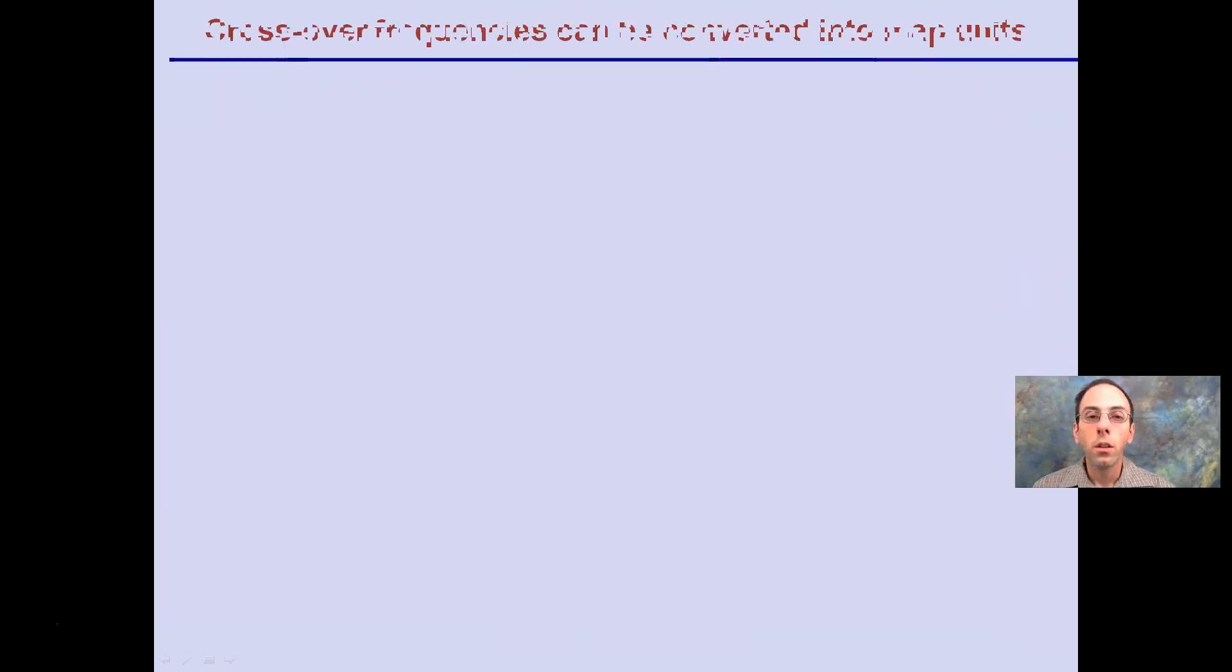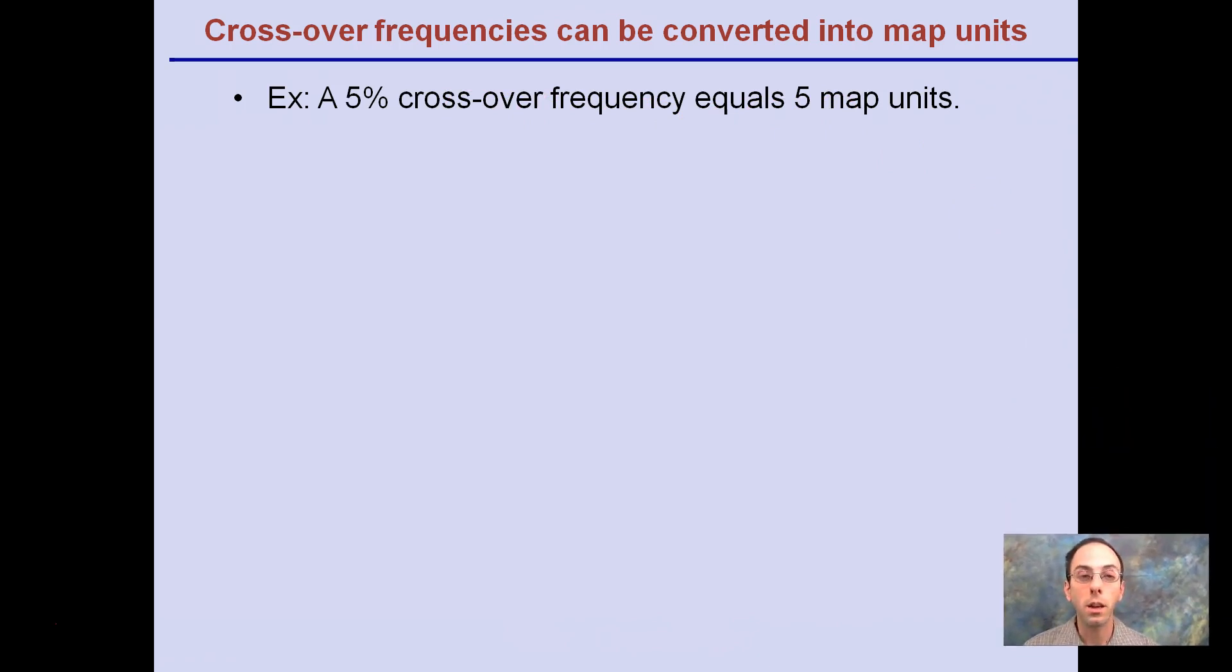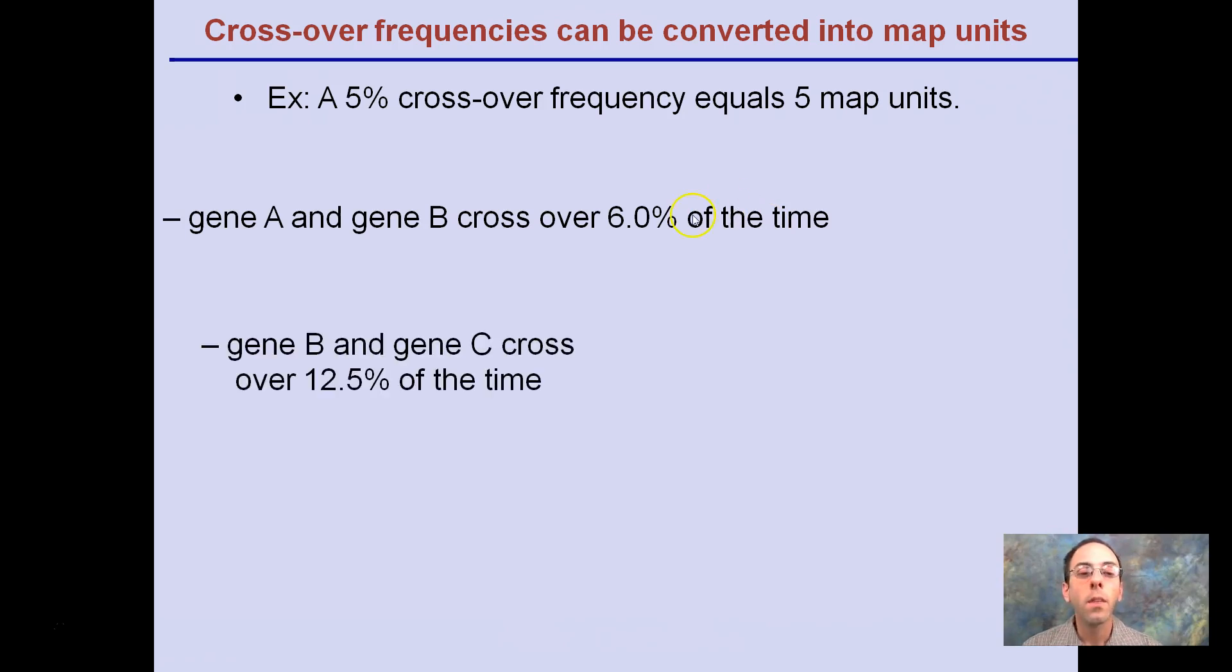Let's look at another example. Crossover frequencies can be converted into these map units that we're looking at. For example, a 5% crossover frequency equals 5 map units. Seems easy enough. Gene A and Gene B cross over 6% of the time. So how many map units would that be? 6 map units. Gene B and Gene C cross over 12.5% of the time. We can convert that to 12.5 map units.